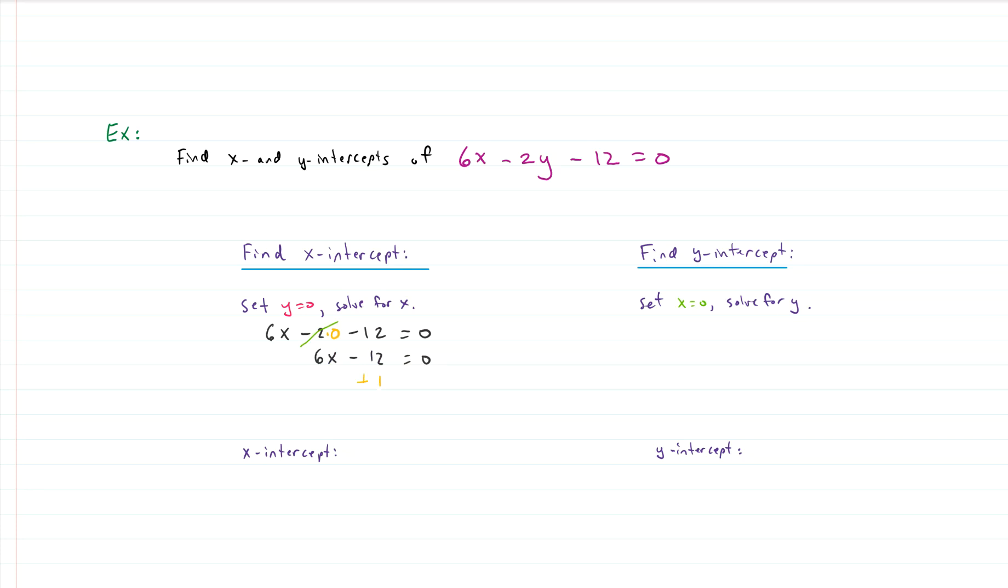We can add 12 to both sides. We're just solving for x now. That cancels the negative 12 out, and we have 6x equals 12. We divide both sides by 6. That cancels, and we have x equals 12 over 6, which is 2. So our x-intercept then is x equals 2 and y equals 0. We found the x-intercept.